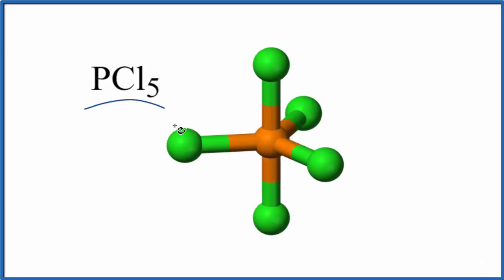In this video we'll look at whether PCl5, that's phosphorus pentachloride, is polar or nonpolar. So the first thing we'll do is look at the bonds here. We have our phosphorus in the center and each one of the green atoms, those are chlorine atoms.